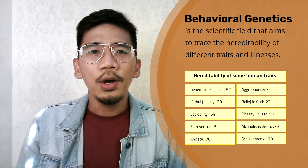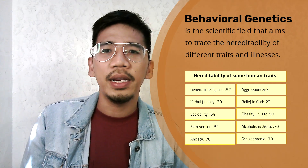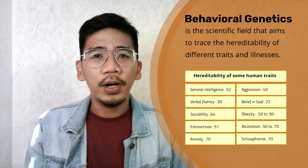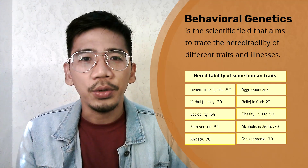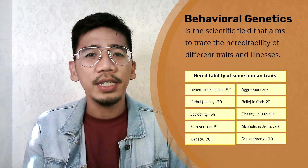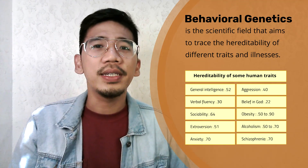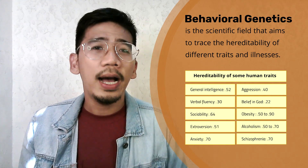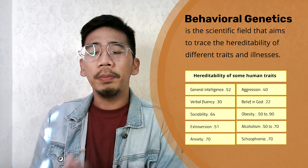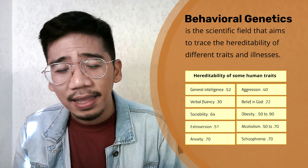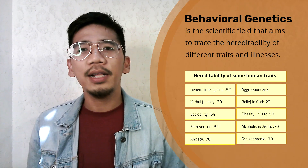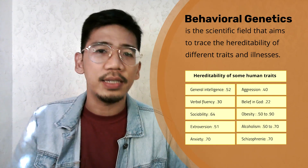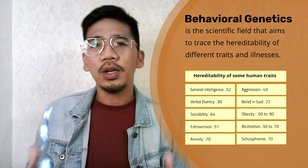Here are some examples of complex human behaviors and their heritability estimates: general intelligence has 0.52, verbal fluency has 0.30, sociability has 0.64, extroversion has 0.51, anxiety has 0.70, aggression has 0.40, belief in God has 0.22, hyperactivity has 0.75, obesity computed by body mass index has 0.50 to 0.90, alcoholism has 0.50 to 0.70, and schizophrenia has 0.70.